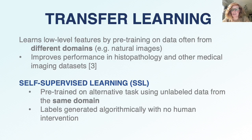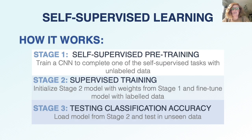This technique has been shown to be very effective in histopathology and other medical imaging datasets. Self-supervised learning is a subcategory of transfer learning where the model is pre-trained on an alternative task using unlabeled data from the same domain. An auxiliary task is chosen and labels are generated algorithmically with no human intervention. Self-supervised learning operates in a three-stage approach. In the first stage, we train a CNN to complete one of the self-supervised tasks using unlabeled data. In stage two, the model is initialized with the weights from stage one and fine-tuned using labeled data. And finally, in stage three, the model from stage two is loaded and tested on unseen data.